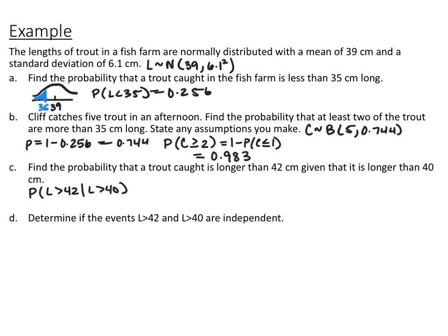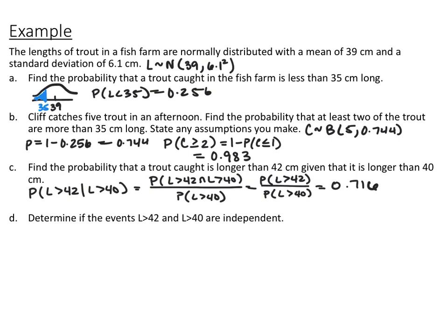For part C, find the probability that a trout is longer than 42 centimeters given that it is longer than 40 centimeters. Using conditional probability: P(L > 42 | L > 40) = P(L > 42 and L > 40) / P(L > 40). Since L > 42 and L > 40 is just L > 42, this becomes P(L > 42) / P(L > 40). Using the normal distribution on the graphing calculator for each, the result is 0.716. So knowing the trout is more than 40 cm long, the probability it exceeds 42 cm is 0.716.